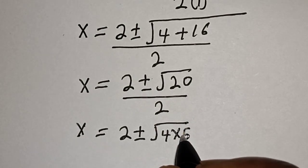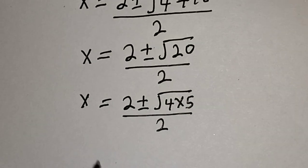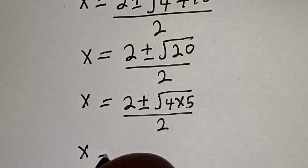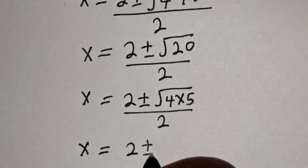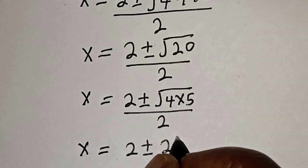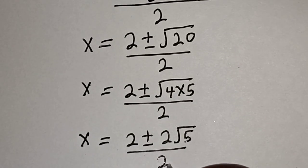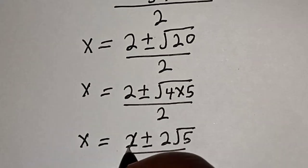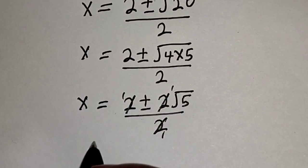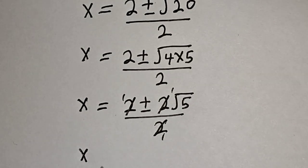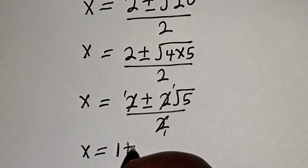x is equal to 2 plus or minus square root of 4 multiplied by 5, divided by 2. And this is x equal to 2 plus or minus 2 square root of 5, over 2. Simplifying, we get 1 plus or minus square root of 5.